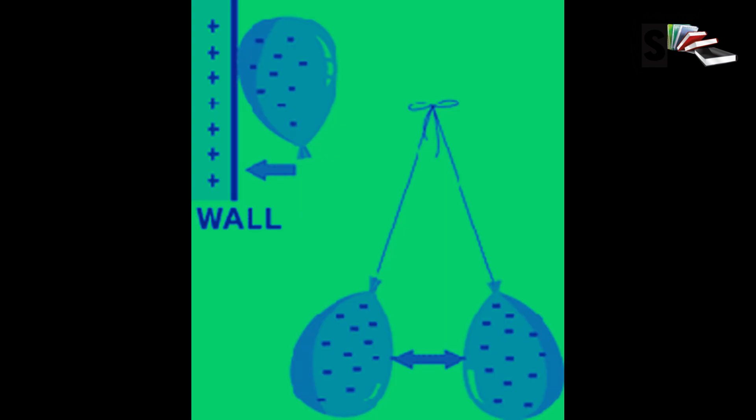When you rub certain materials together, they get electric charge. This is friction. Friction is the force caused by rubbing things together.